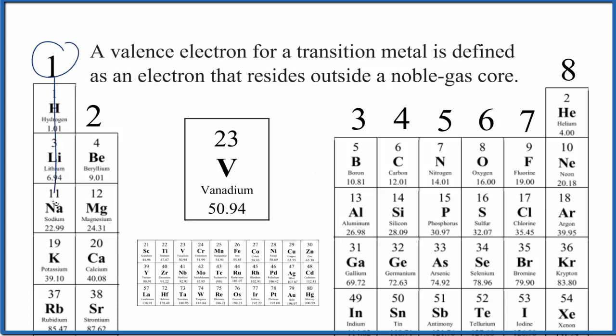Often we think of group one here. All of these have one valence electron, group two have two valence electrons. But then we skip the transition metals because they're a little bit more complicated, and then we go across the table. So that's a general trend that's useful that doesn't really work for transition metals.